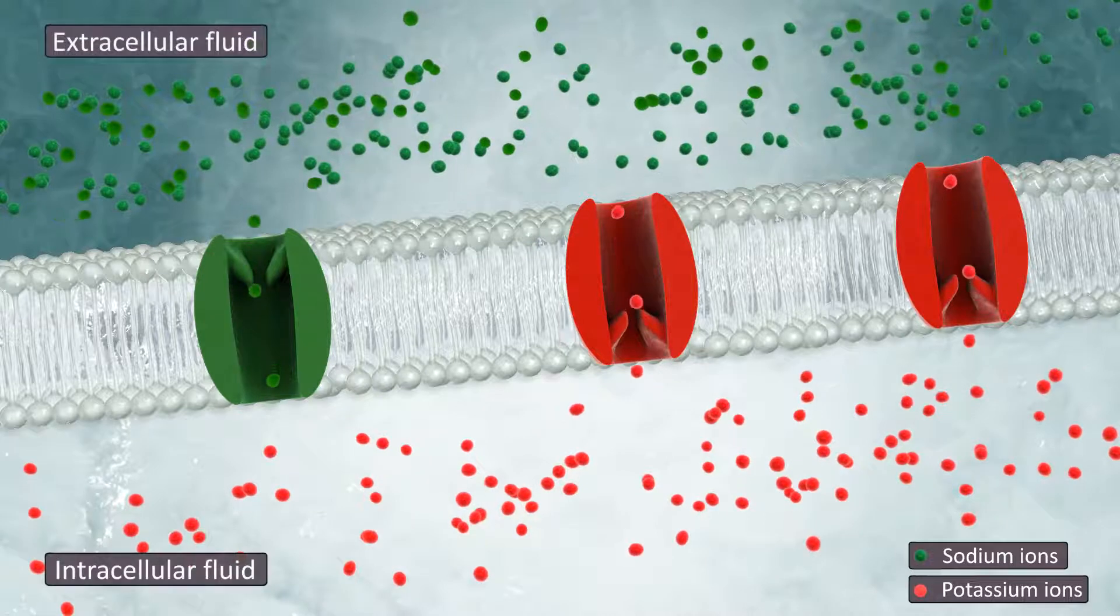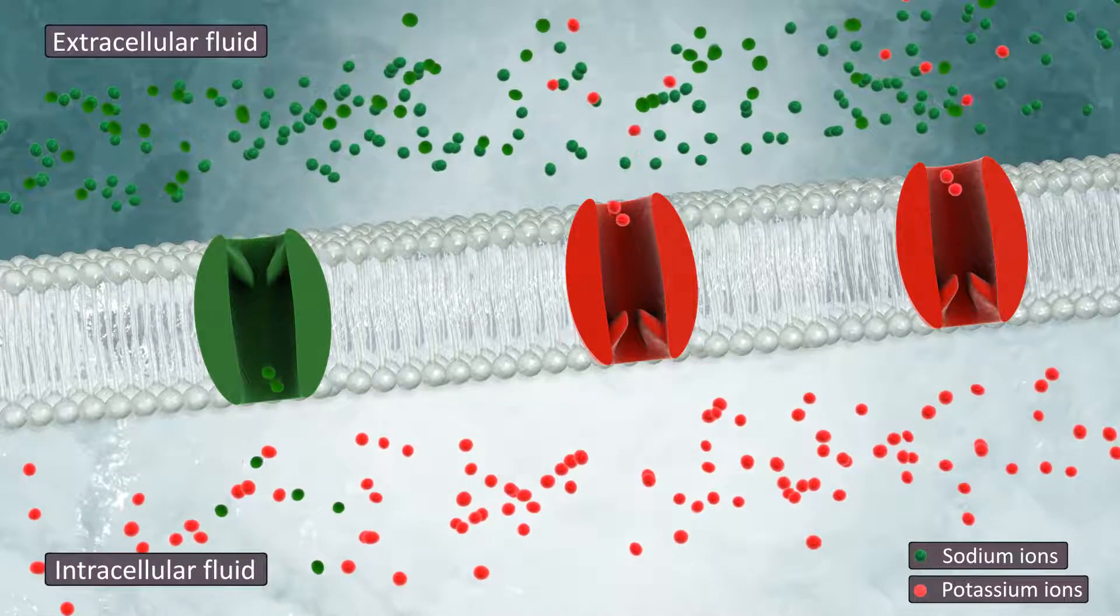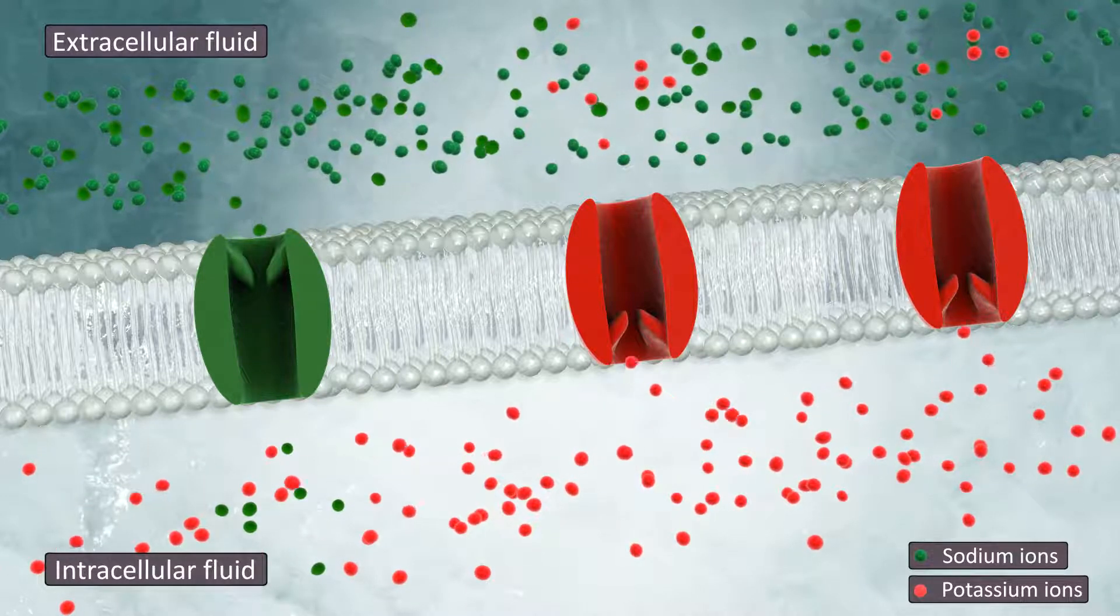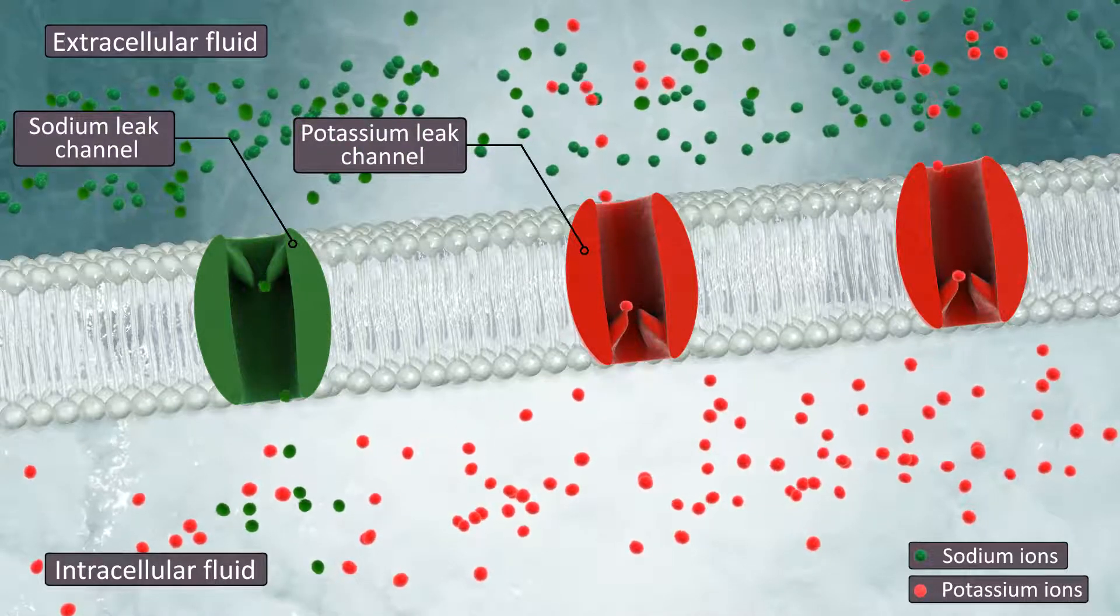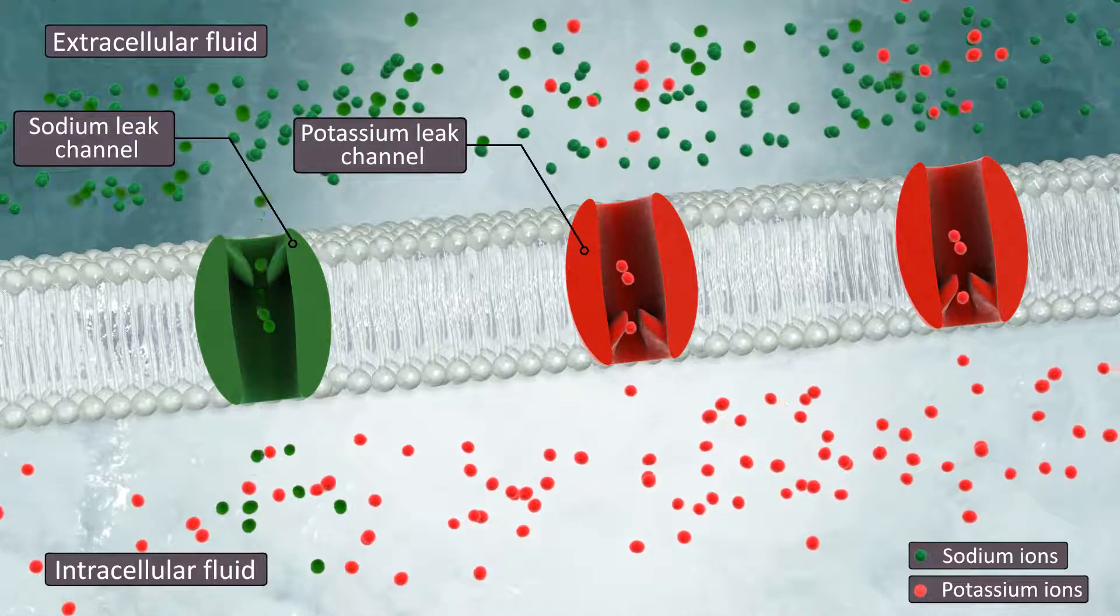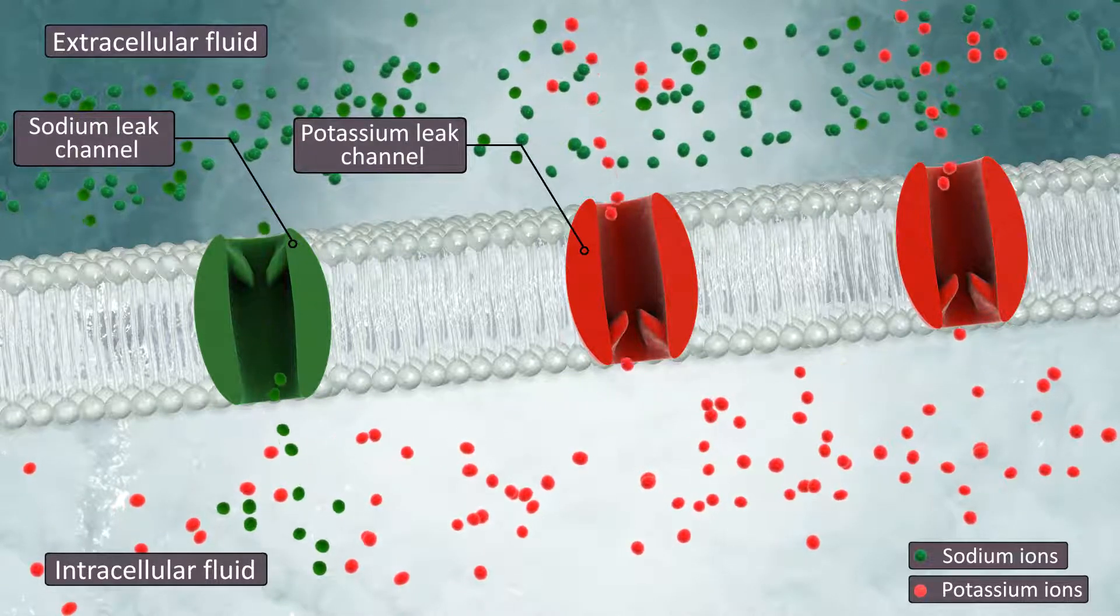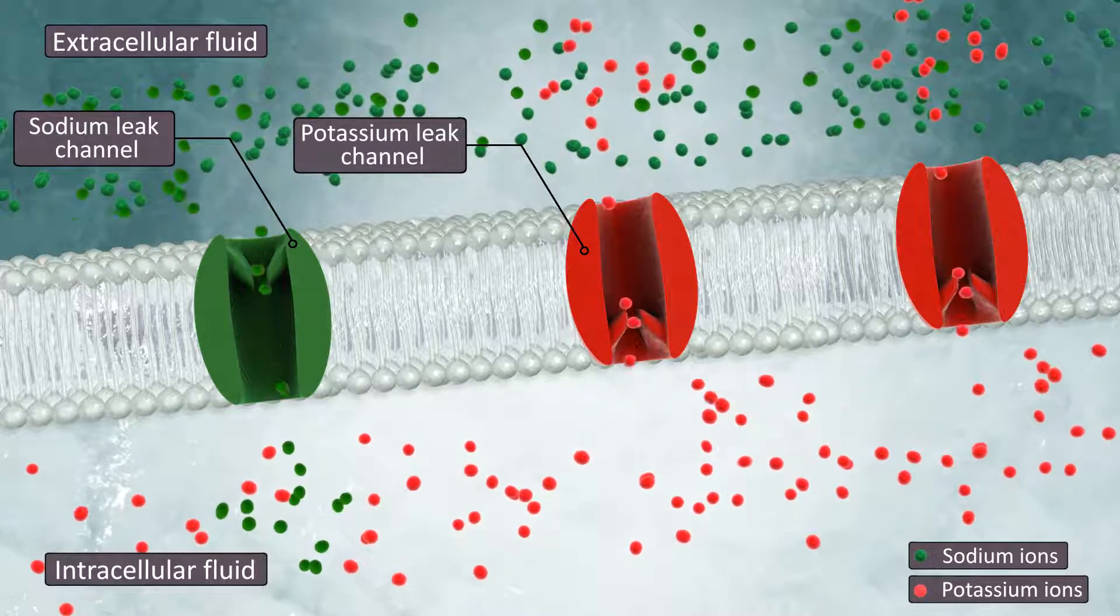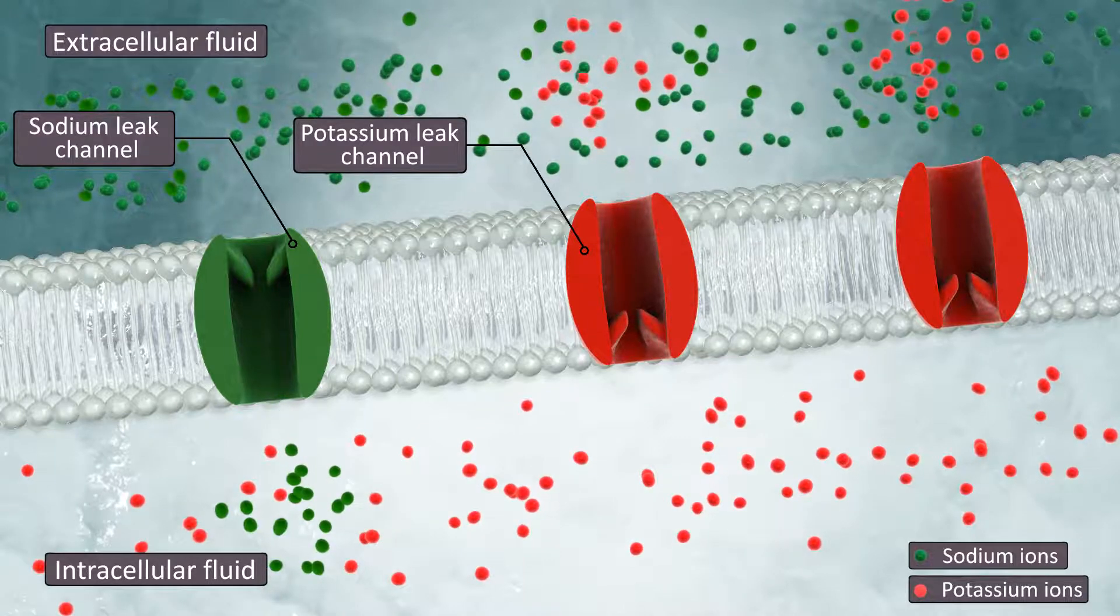The resting membrane potential voltage is determined by the concentration of electrically charged ions on either side of the membrane. It is established primarily by leak channels. There are more potassium leak channels than sodium leak channels, so more positively charged potassium ions pass out of the cell than positively charged sodium ions diffuse in. Also, sodium-potassium pumps move more sodium ions out of the cell than potassium ions in.